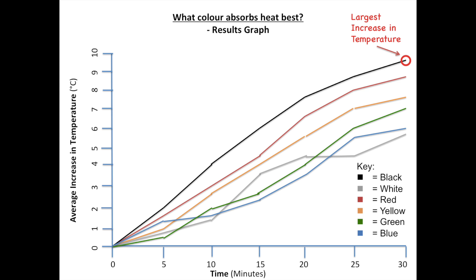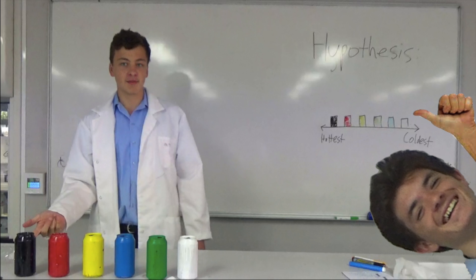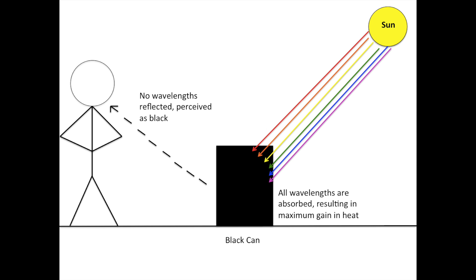By the end of the experiment, black had the largest increase in heat, followed by red, yellow, green, blue, and finally white. From this, we were able to confirm our hypothesis. The reason that black can absorb the most amount of heat is because black objects absorb all frequencies of light. This results in the largest possible gain in energy compared to all other colors.